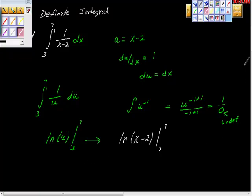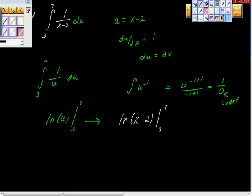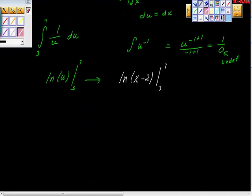Remember, we're going to use fundamental theorem of calculus here, and we're going to do f of b minus f of a. So f of b is f of 7 minus f of 3. So that looks like ln of 7 minus 2.